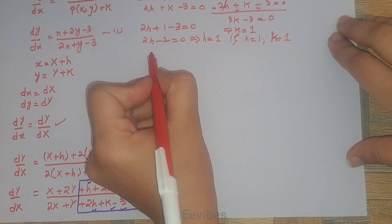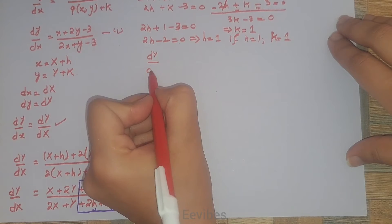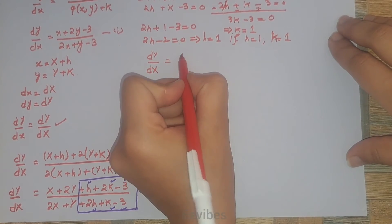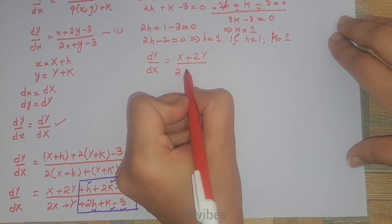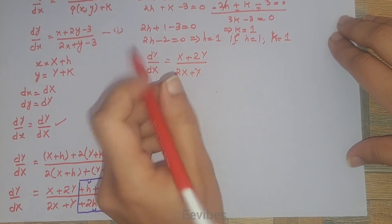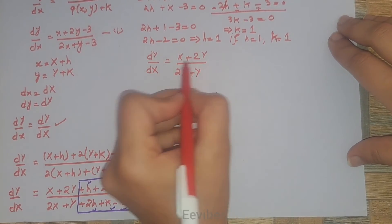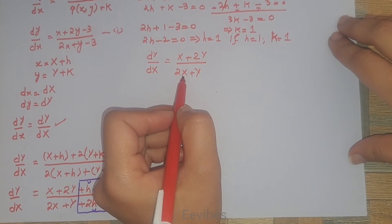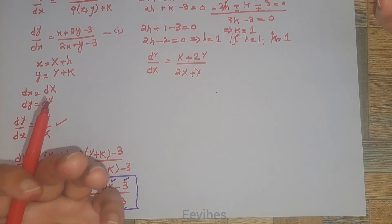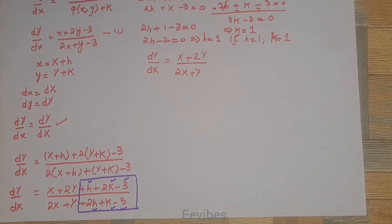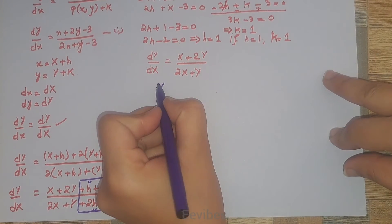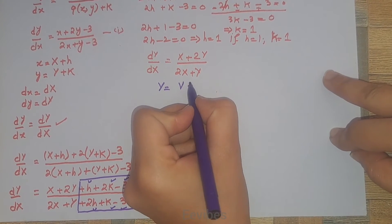With h = 1 and k = 1, the equation is converted into homogeneous form. We can write it as dY/dX = (X + 2Y) / (2X + Y). There are no constants present in the numerator or denominator, so this is now a homogeneous differential equation, which we solve using the variable separable method by substituting Y = vX.